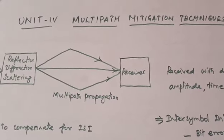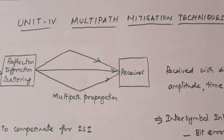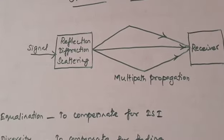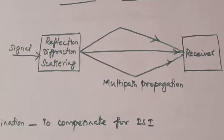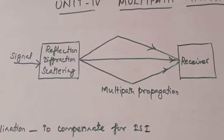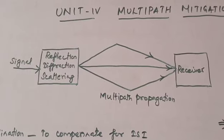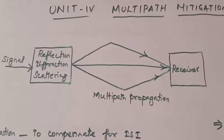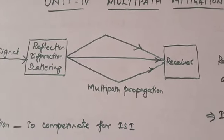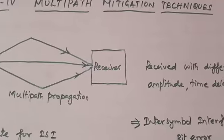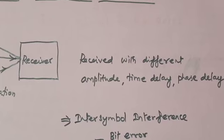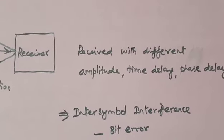Already we have known what is multipath propagation and what are the effects of multipath propagation. When a signal is transmitted, the propagation mechanisms like reflection, diffraction, and scattering will make the signal get diverted into various directions. Due to the diversion, these signals travel along various paths and finally reach the receiver at different time intervals. Since these signals come from various directions, they are received at the receiver with different amplitude, different time delay, and different phase delay.